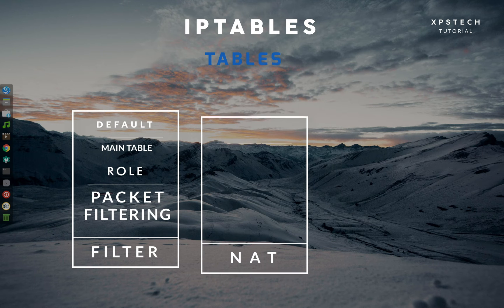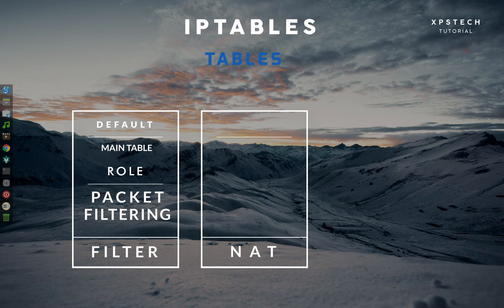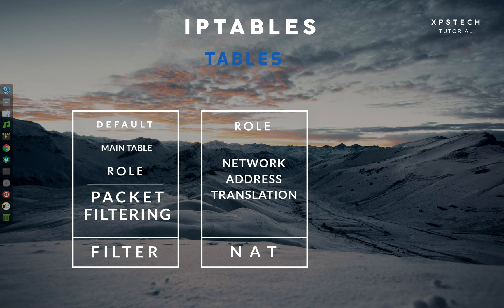Second is the NAT table. As the name suggests, this table is used to provide network address translation rules. The rules in this table determine whether and how to modify the packet's source or destination addresses in order to route the packet in a NAT setup where direct access is not possible.